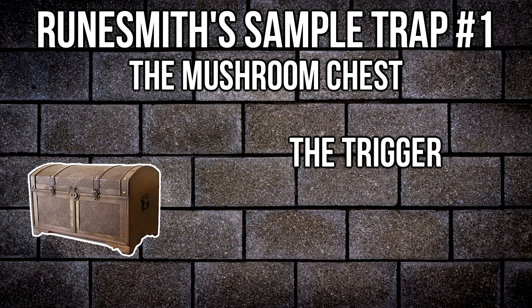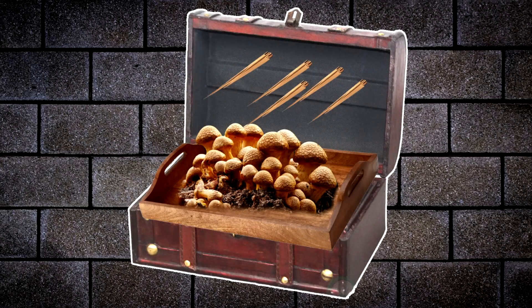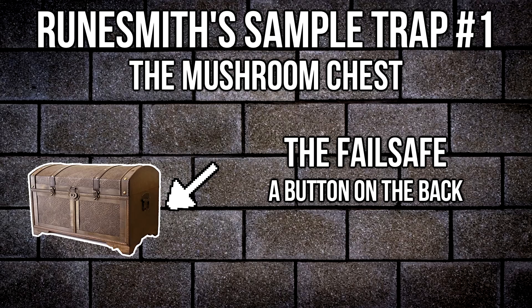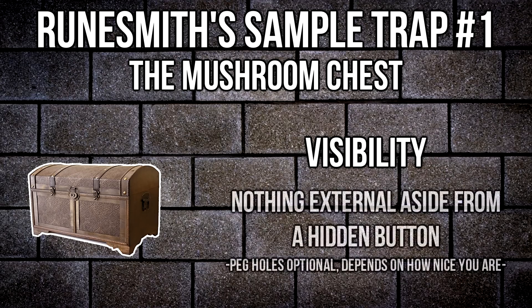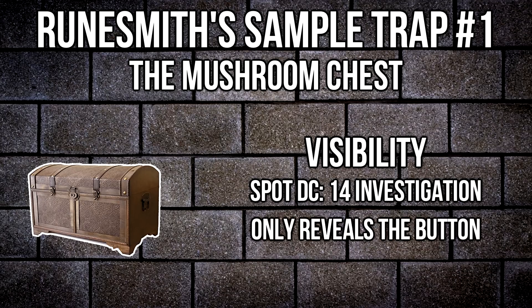Step one is designing the trigger. For this trap, it's as simple as opening the chest, which reveals the mushrooms. I'll add wooden needles attached to the roof of the chest that cut through the shrooms and spray the spores out. Step two is the failsafe — basically what the trapper uses to avoid the trap itself. I'll put a button on the back of the chest that, when pushed, slides two pegs into the mushroom tray, attaching it to the roof. For visibility, there's no real way to eye the chest and catch note of the trap, because everything but the button is inside. A solid DC 14 investigation check will reveal the button, but not its purpose.